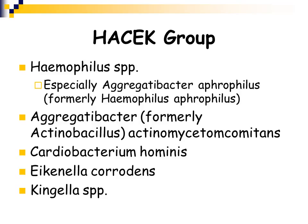Cardiobacterium hominis, Eikenella corrodens, and Kingella species — these five organisms make up the HACEK group.